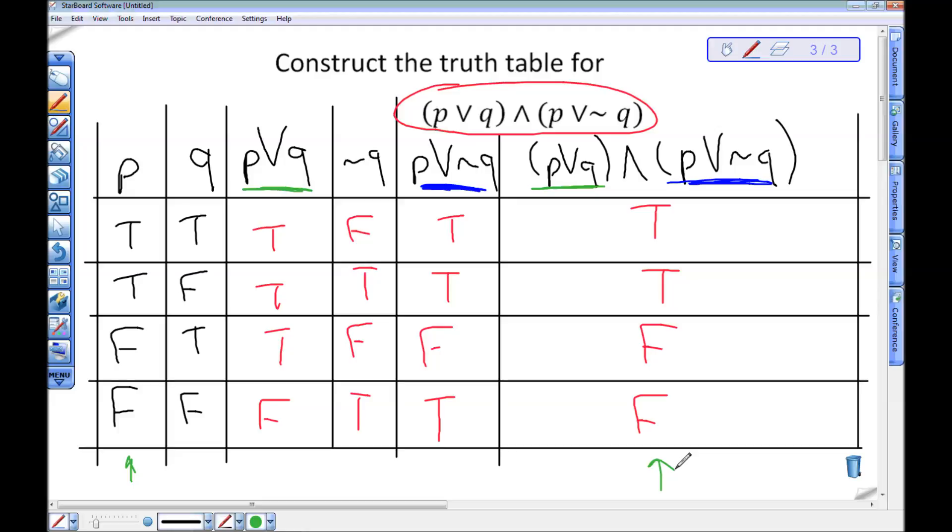And if you get into circuit design and real applications of this in the physical world, that's where this can be really handy. I can simplify this circuit that calculates P or Q and P or not Q just down to the circuit that has P. And that will save me a lot of computation time, power, and cost.